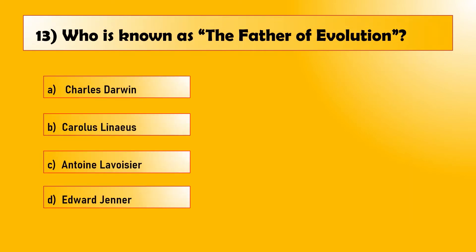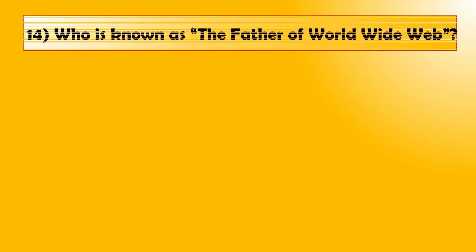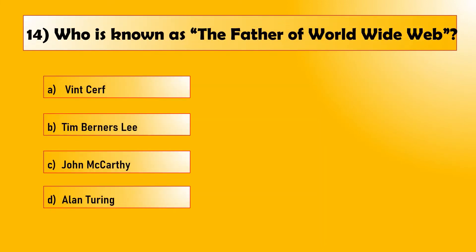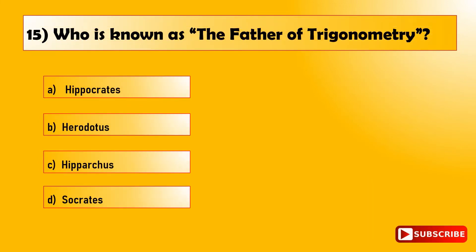Question number twelve: who is known as the father of economics? Option B, Adam Smith. Question number thirteen: who is known as the father of evolution? Option A, Charles Darwin. Question number fourteen: who is known as the father of the World Wide Web? Option B, Tim Berners-Lee. Question number fifteen: who is known as the father of trigonometry? Option C, Hipparchus.